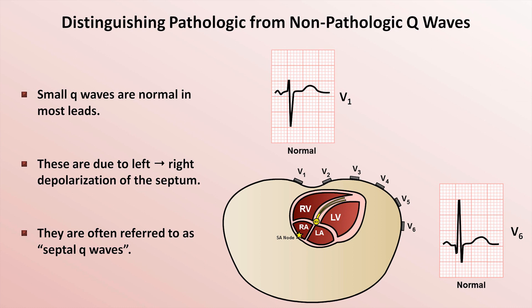As you can see, V6 often has a small S-wave as well, the origin of which is irrelevant for routine EKG interpretation and is beyond the scope of this video.